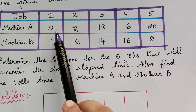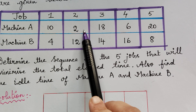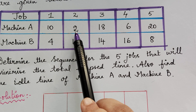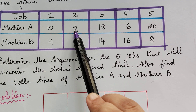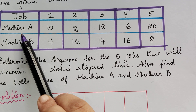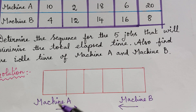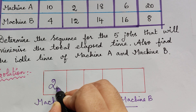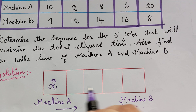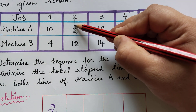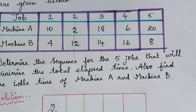The first step is we have to look out for the least value, that is the minimum value out of all the processing times. Out of all these values we see that 2 is the minimum value. The job corresponding to that is job 2 and the machine corresponding to this value is machine A. So job 2 should be written under machine A — that will be the first job to be performed. After writing that, we give a small strike so that we know this job is completed.